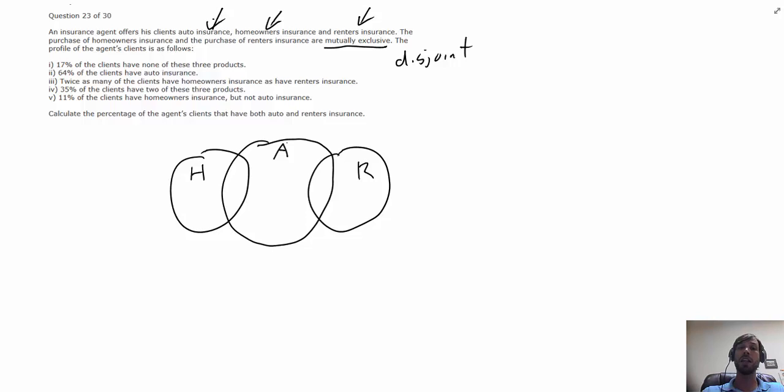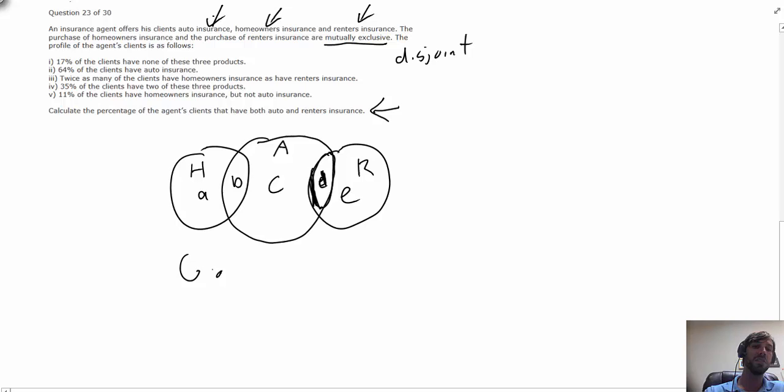For a problem like this, a way I like to approach it is to label each of the disjoint components—in this case there are only five: A, B, C, D, and E—and proceed through this problem by rephrasing each of the conditions in terms of these five unknowns, seeing which one, hopefully honing in on the ones that I am interested in. In this case, what we're interested in is calculating the percentage of clients that have both auto and renters, so really our goal is to find D.